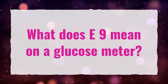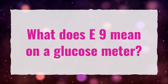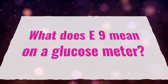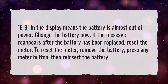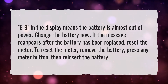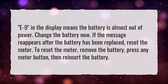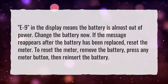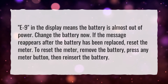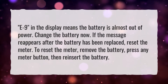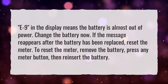What does E9 mean on a glucose meter? E9 in the display means the battery is almost out of power. Change the battery now. If the message reappears after the battery has been replaced, reset the meter.